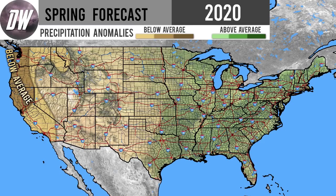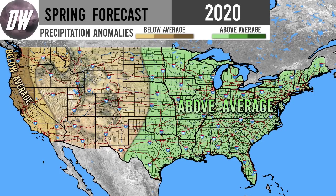Now into that second layer of below average precipitation — this is also going to be for California, Oregon, and Washington. This is where it's going to be a little bit more moderately below average precipitation, so these are areas where you could expect it to be a little more dry than the surrounding areas.